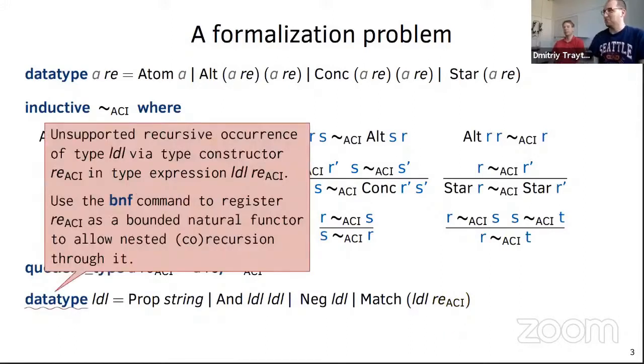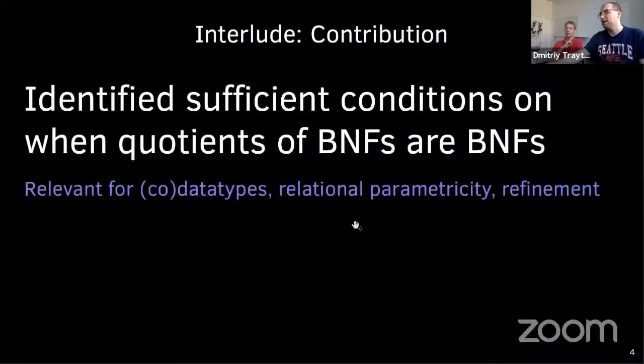I dimly remember having heard around ACI equivalence and regular expressions in the context of Brzezowski derivatives. If you consider regular expressions modulo this equivalence relation, you get a finite set where you usually would get an infinite one. Having finite sets is extremely useful for proofs. I start to see the problem.